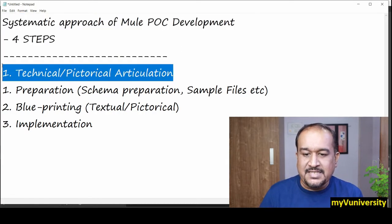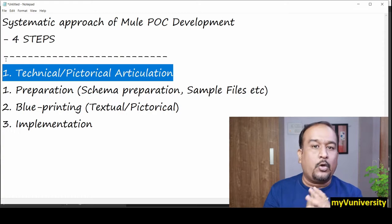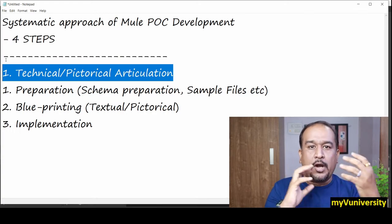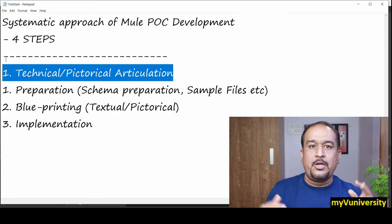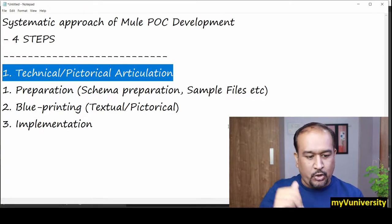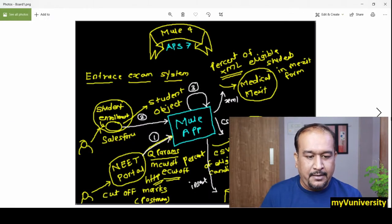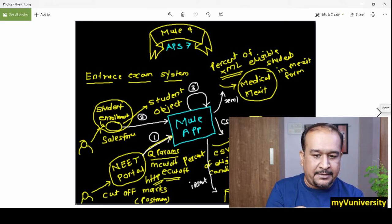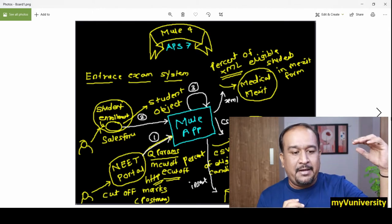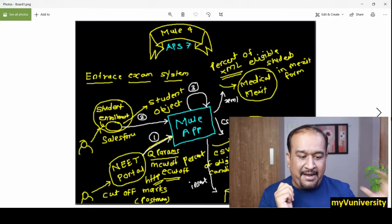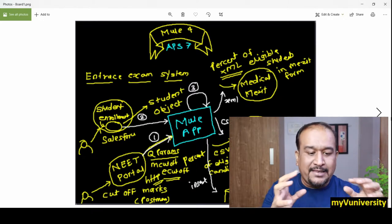The first step is technical or pictorial articulation. Whatever you understood from the customer, whatever requirement you have received, maybe you draw the picture or write a technically clear paragraph. I'll show you an example. Suppose my customer explained some requirement and I have drawn a diagram like this. This is an entrance exam system where student enrollment, NEET portal, medical merit, engineering merit, and then failed students records are all there in this system.